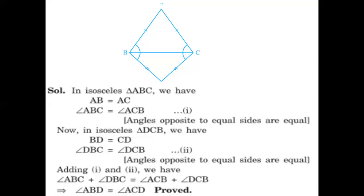If I add the first and second equations: angle ABC plus angle DBC equals angle ACB plus angle DCB. Now, looking at the figure, angle ABC plus angle DBC together becomes angle ABD. Likewise, angle ACB plus angle DCB together becomes angle ACD. Hence, we have proved that angle ABD is equal to angle ACD.